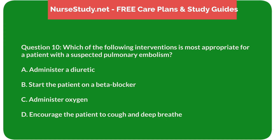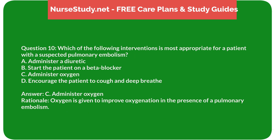Question 10: Which of the following interventions is most appropriate for a patient with a suspected pulmonary embolism? A) Administer a diuretic, B) Start the patient on a beta blocker, C) Administer oxygen, D) Encourage the patient to cough and deep breathe. Answer: C, Administer oxygen. Rationale: Oxygen is given to improve oxygenation in the presence of a pulmonary embolism.